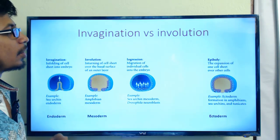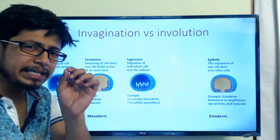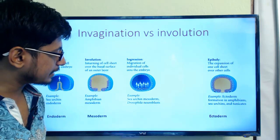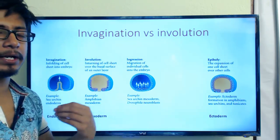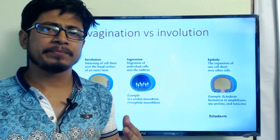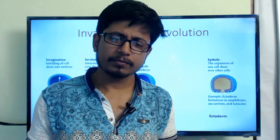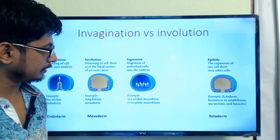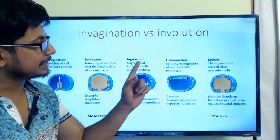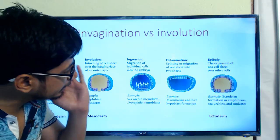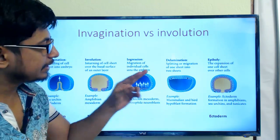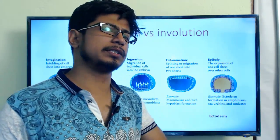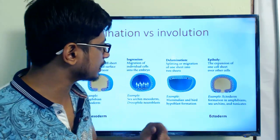We also have ingression, where individual cells start migrating from one pole to the other. This is seen mostly in insect embryogenesis, such as in Drosophila, where single cells migrate from one pole to the other. The fifth type is delamination — the splitting of cells into another layer — which is visible in birds, because bird gastrulation is different from frog and human gastrulation.